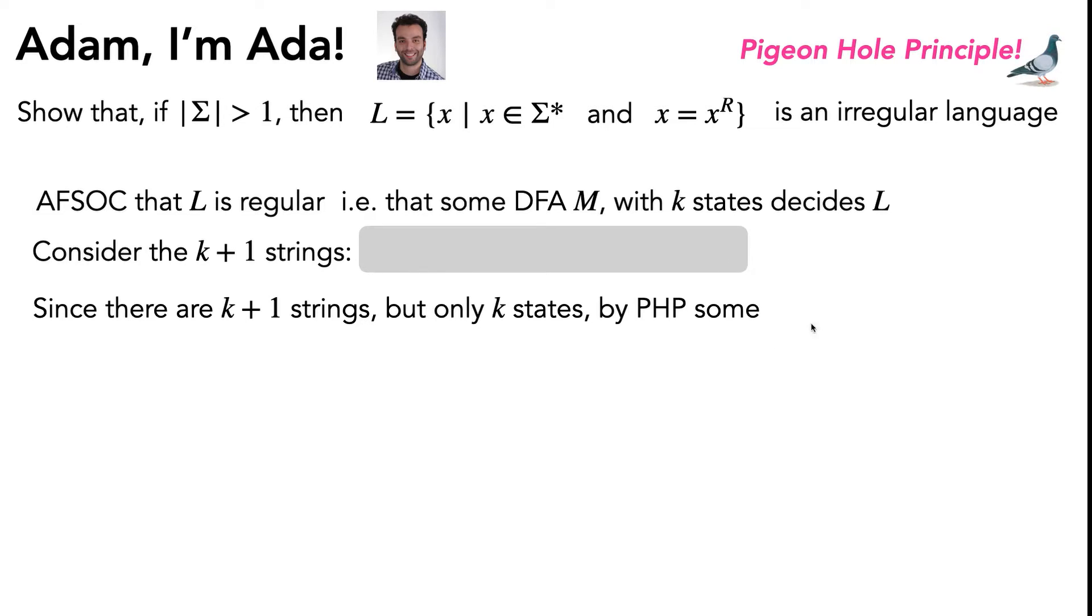So let's call these for now just the blue string and the red string, and they have to end up in the same state. Since this blue string and this red string end up in the same state, we actually also know that the augmented blue string and the augmented red string must end up in the same state as well.